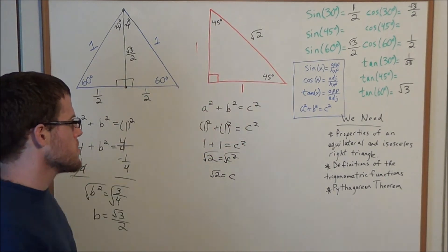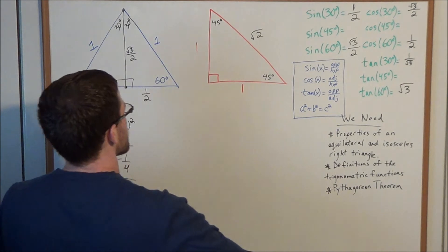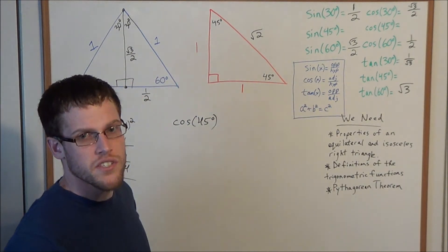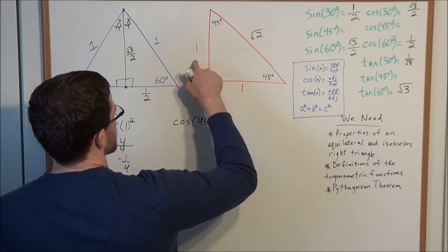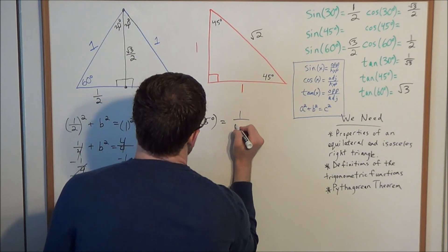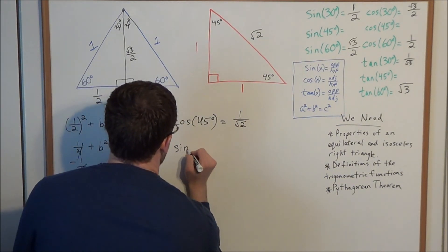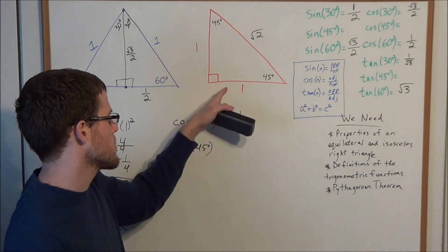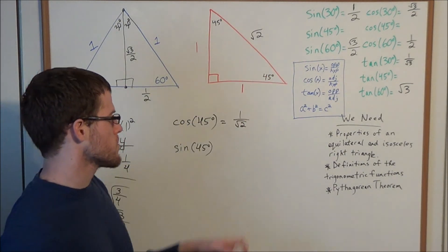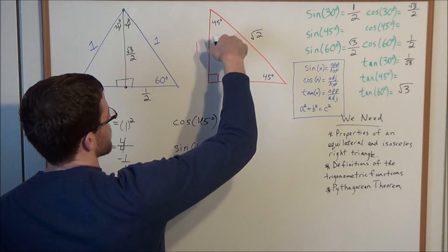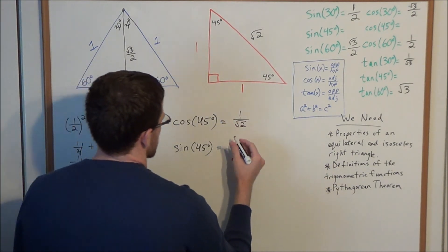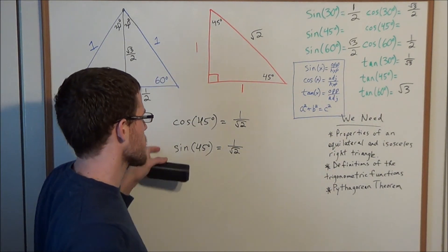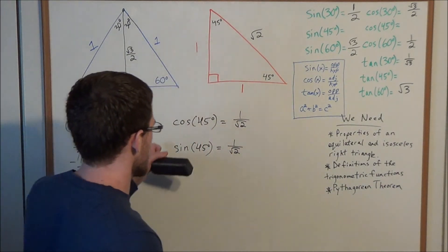Now we apply the trigonometric functions. Cosine of 45 degrees: adjacent to the 45-degree angle is one, divided by the hypotenuse of the square root of two. For sine of 45 degrees, it doesn't matter which 45-degree angle we use — opposite is also one, divided by the hypotenuse of the square root of two. So sine of 45 equals one over the square root of two, the same as cosine of 45. This is a special trigonometric property we'll explore later.